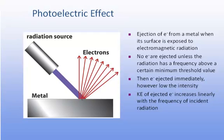The photoelectric effect was a major discovery. It was found that electrons could be ejected from the surface of a metal upon exposure to electromagnetic radiation. Further, it was shown that no electrons were ejected unless the radiation had a frequency above some certain minimum threshold value.